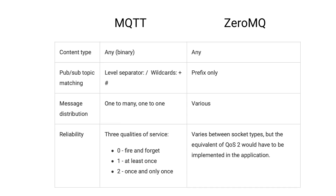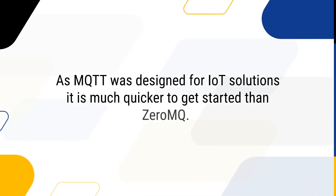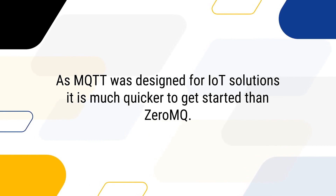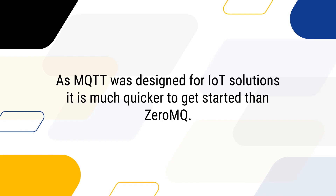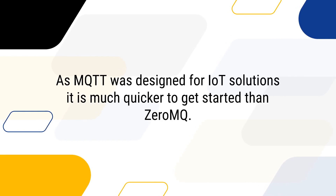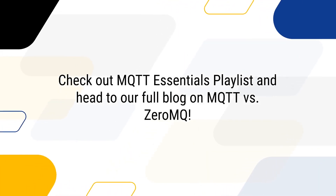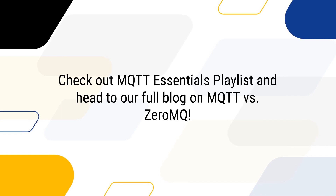Message distribution in MQTT is one-to-many and varies in ZeroMQ. MQTT provides three qualities of service and thus improves reliability, while in ZeroMQ it varies between socket types, which means the equivalent of quality of service 2 would have to be implemented in the application. So what is better for IoT, MQTT or ZeroMQ? As MQTT was designed for IoT solutions, it is much quicker to get started than ZeroMQ. MQTT features provided out of the box, including reliability, would have to be re-engineered in ZeroMQ and would take significant effort. MQTT cloud services and brokers are available, making the process of building IoT solutions very quick. Check out the MQTT Essentials playlist to learn more about MQTT, and head to our full blog post on MQTT versus ZeroMQ for a more detailed technologies comparison.